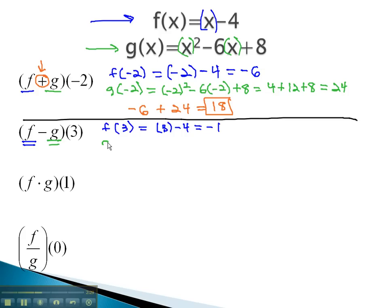Plugging 3 into the g function gives us 3 squared, minus 6 times 3, plus 8, or multiplying 9 minus 18, plus 8, is equal to negative 1.